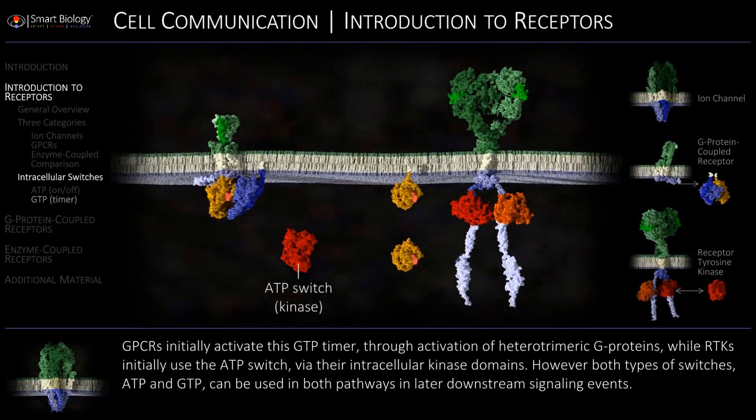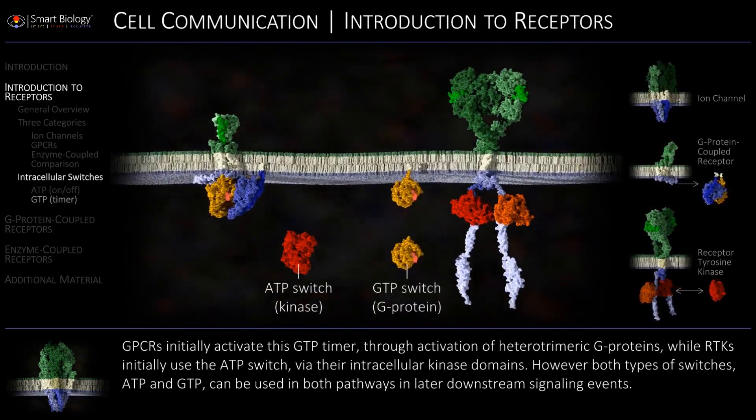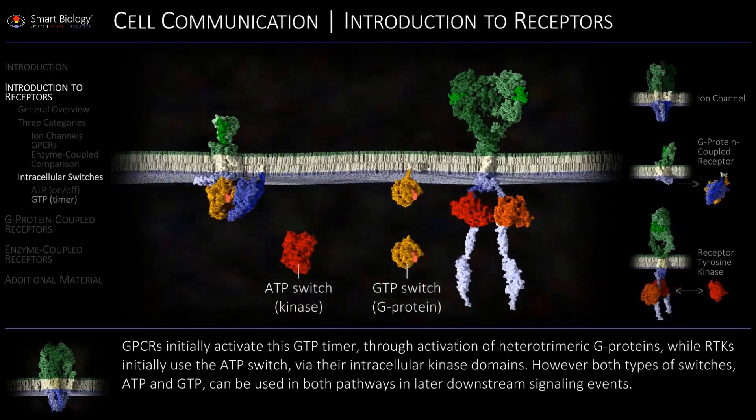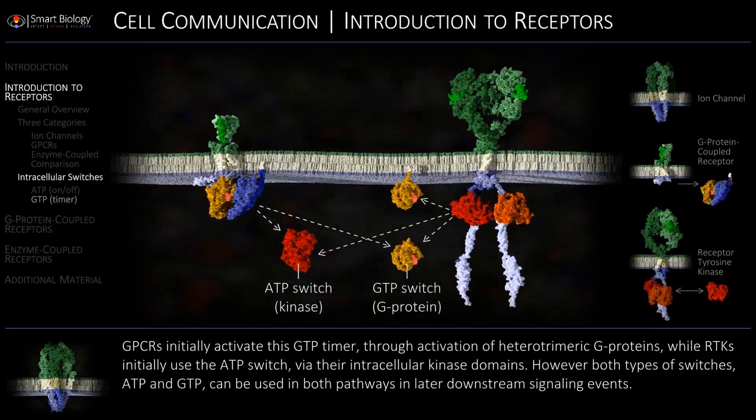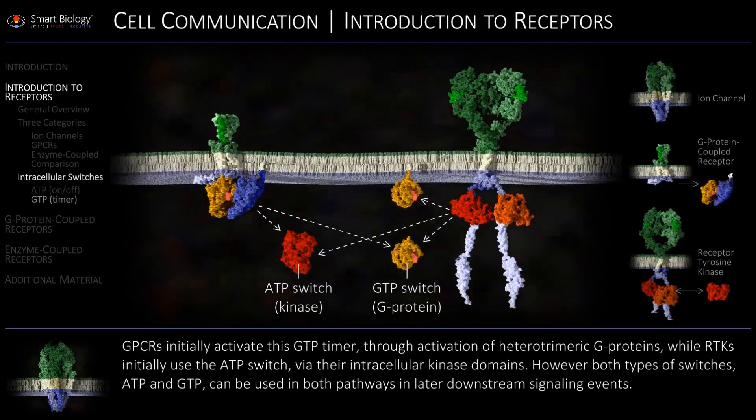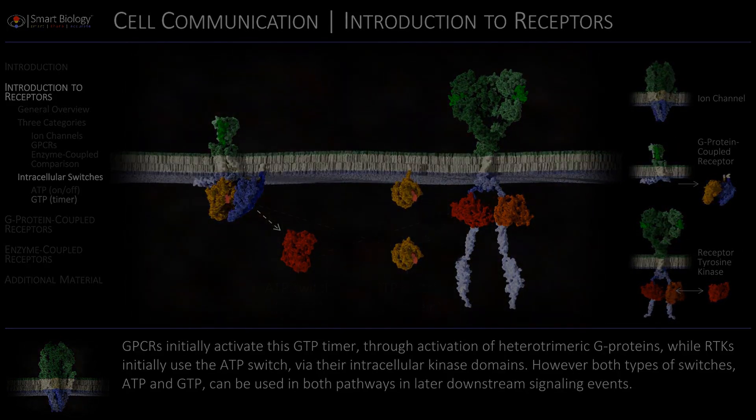ATP and GTP can be used in both pathways in later downstream signaling events.